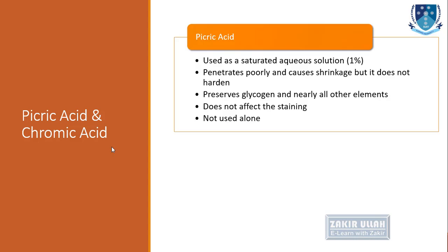Picric acid is used as a 1% saturated aqueous solution. It penetrates very poorly into tissues and causes shrinkage but does not harden the tissue. It is good for the preservation of glycogen and almost all elements, and does not affect the staining procedure. However, picric acid cannot be used alone; it must be mixed with other chemical fixatives.